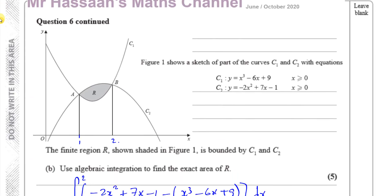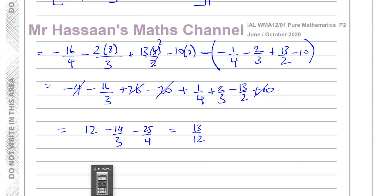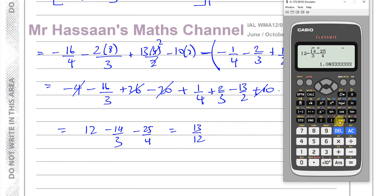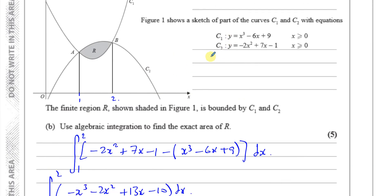The exact area is 13 over 12 square units — equivalently 1 and 1 twelfth — so leave it in fraction form since an exact answer is required. To find the area bounded between two curves, subtract the two equations and always put the upper curve first when you subtract.